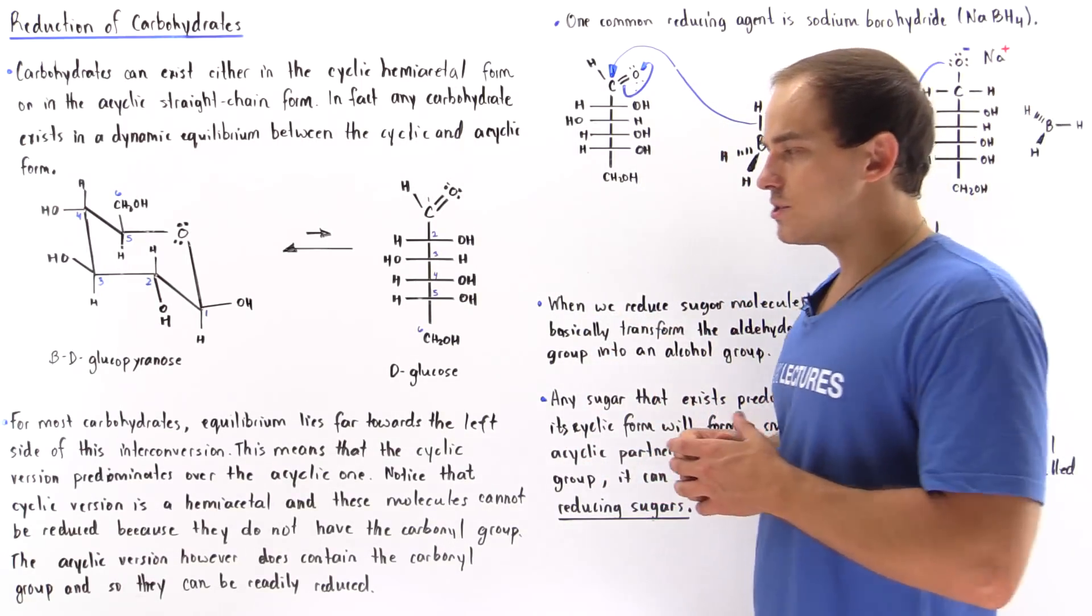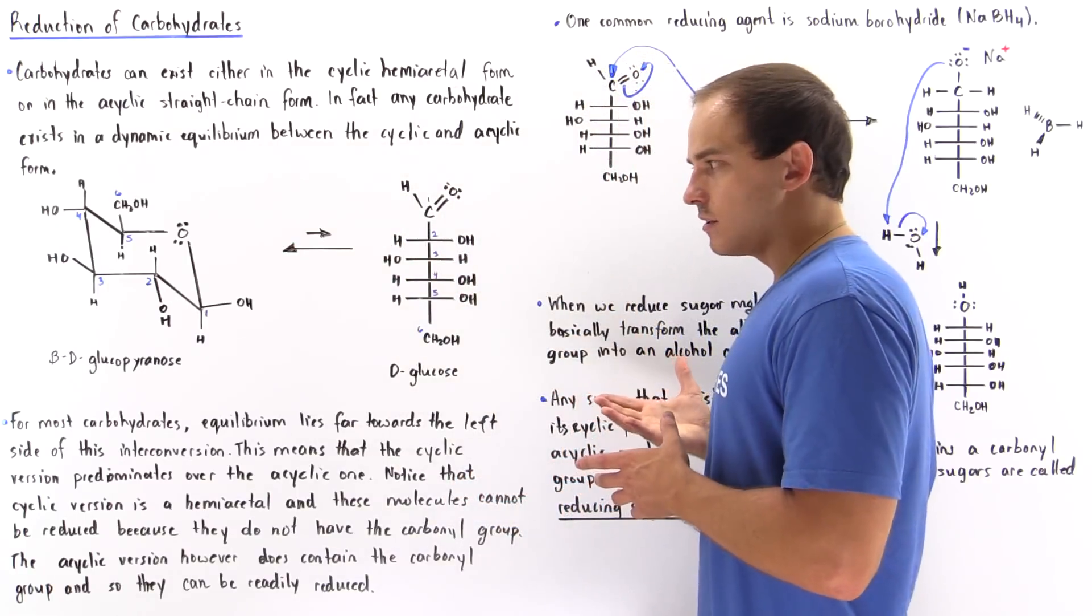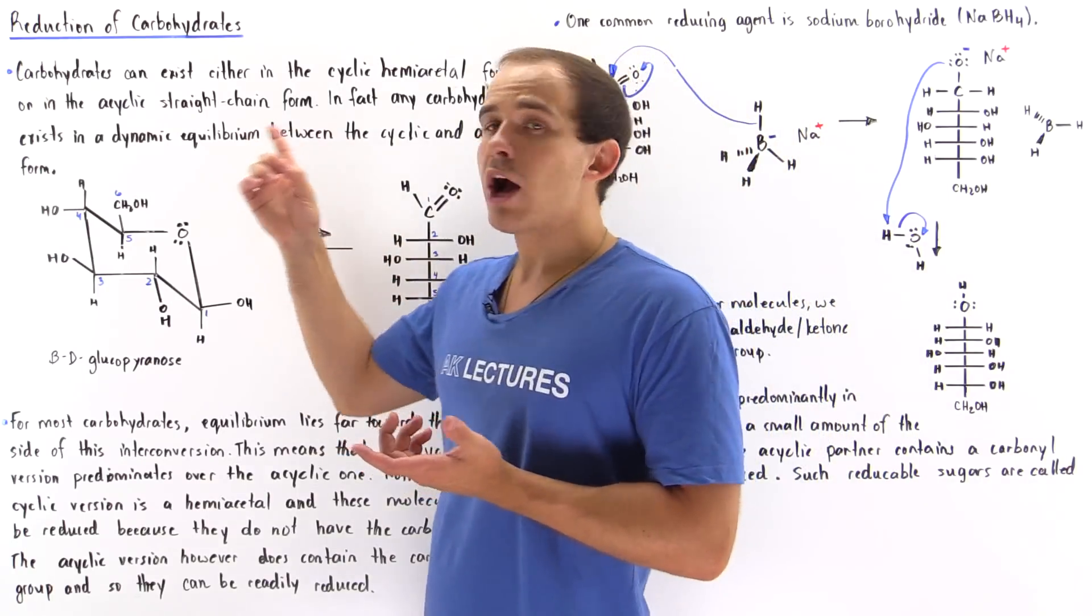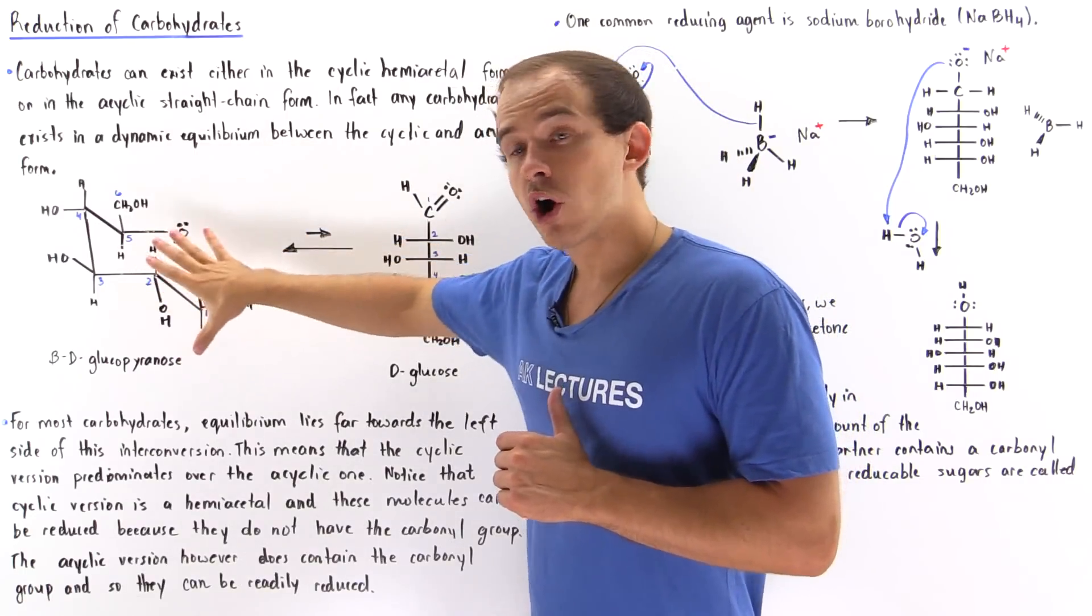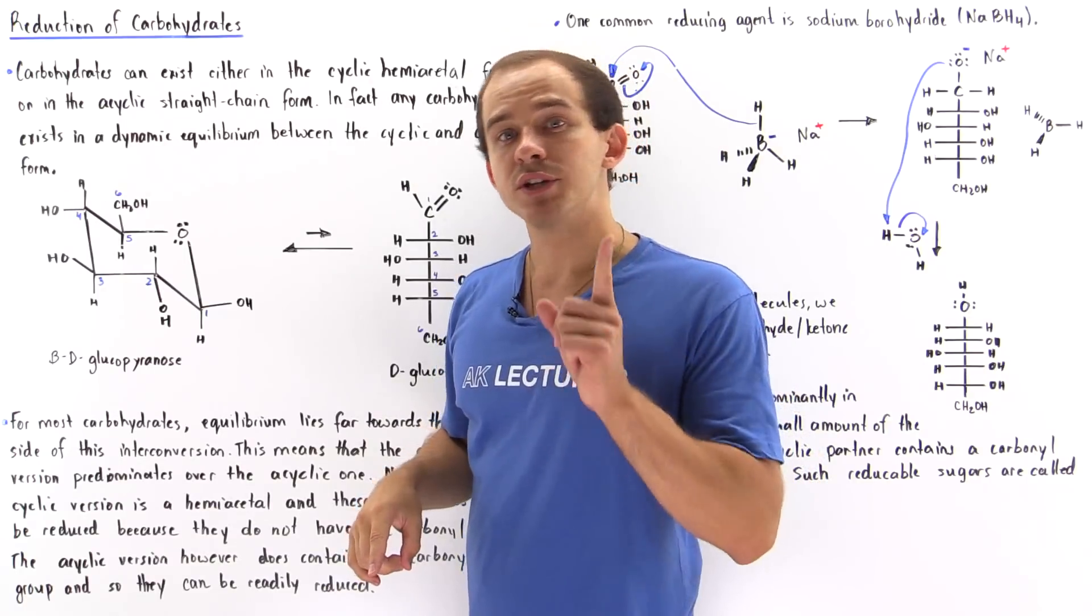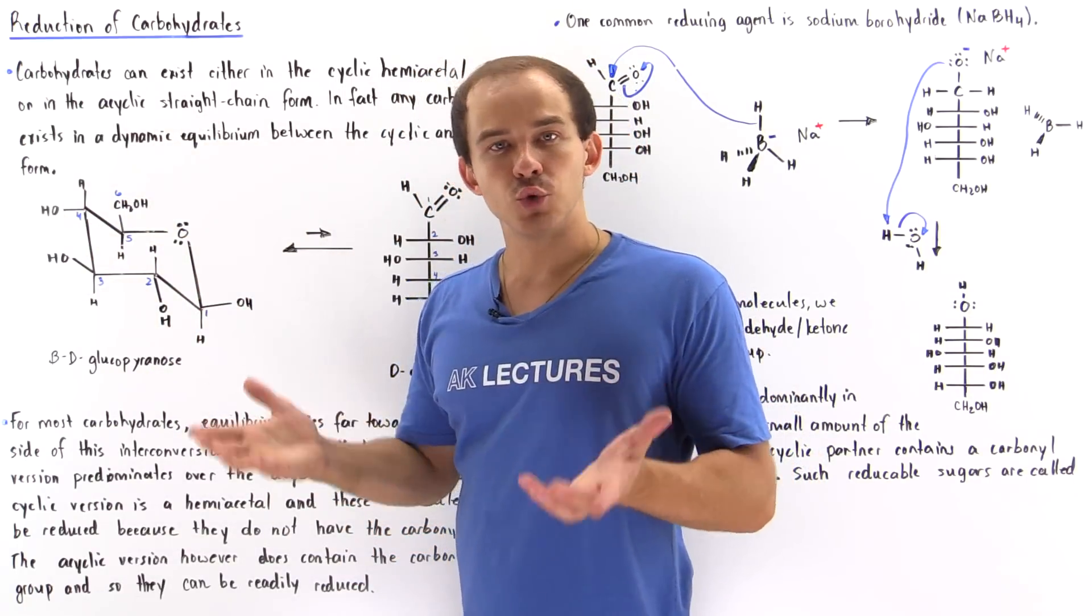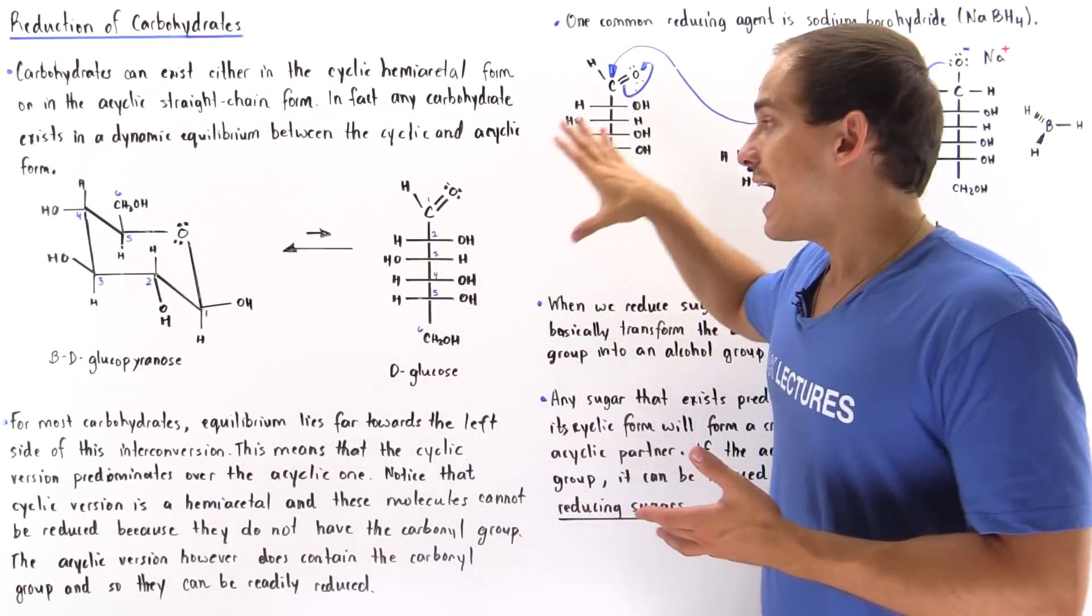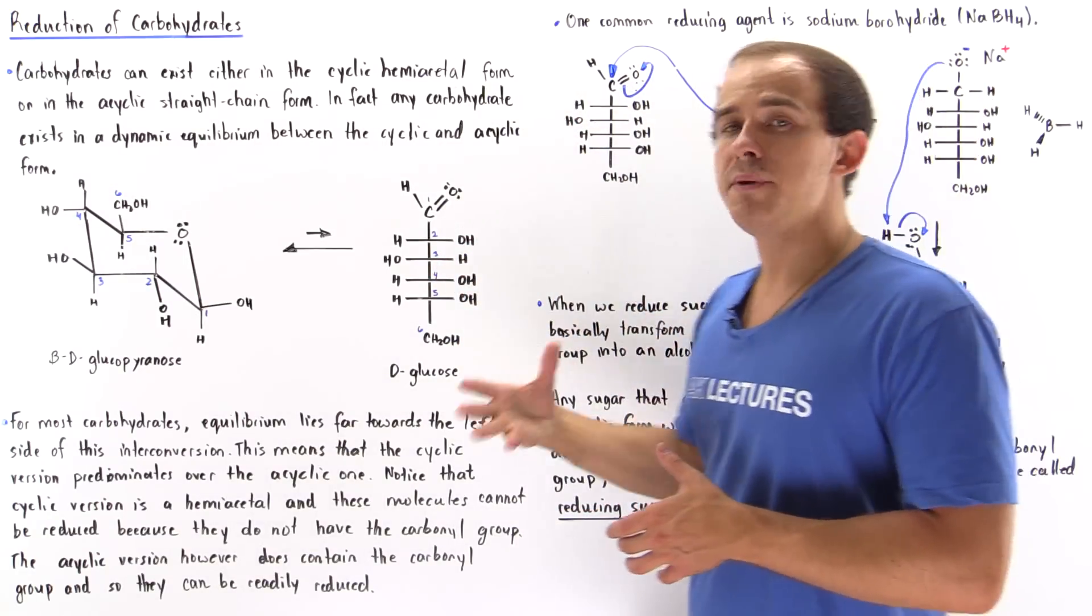Now the question is, which one of these versions, the cyclic or the acyclic, can actually undergo our reduction reaction? It turns out that the more dominant cyclic version cannot undergo a reduction reaction. It will not be reduced by any reducing agent. But this acyclic version, the open straight chain molecule, will be reduced.